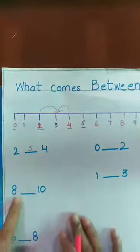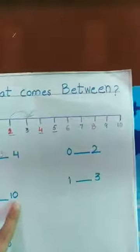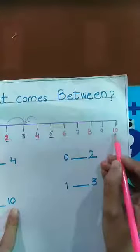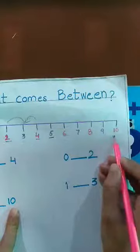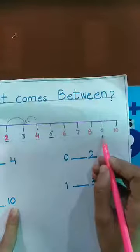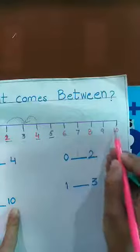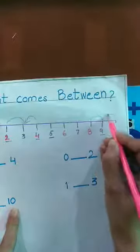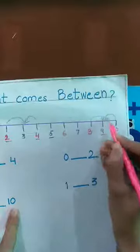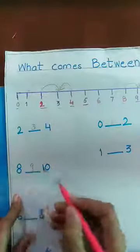Isi tarah this is number eight and ten. Ab yahan pe dekho — yeh koun sa number hai? Eight. Or yeh kya hai? Ten. Toh yeh dono kis color ki hain? Pink color ki hain. Inke darmiyan mein koun sa color hai? Purple. Toh yeh kya hai? Inka between hai. Ab eight or ten ka between koun sa hai? Nine. Yahan pe hamne kya likha? Nine.